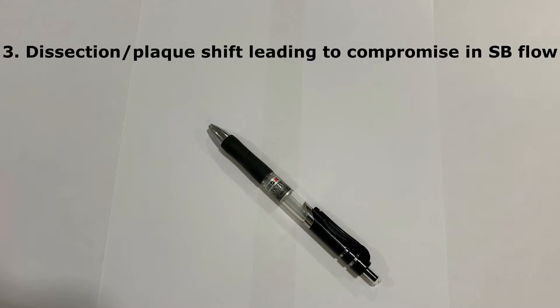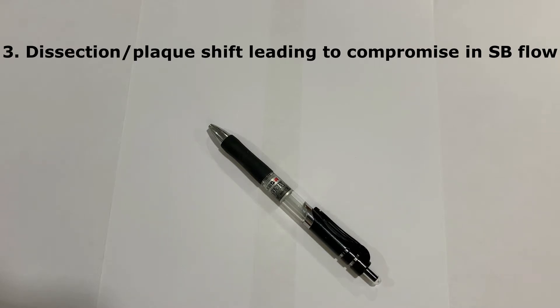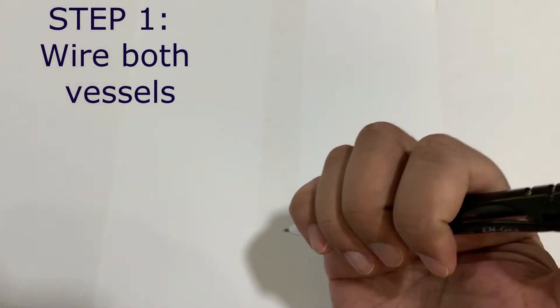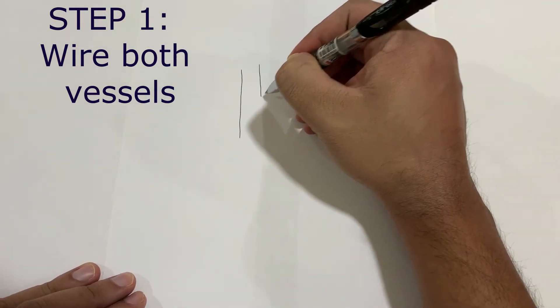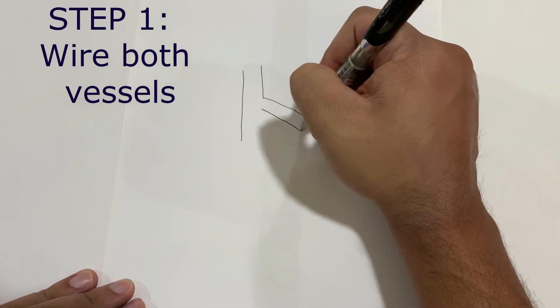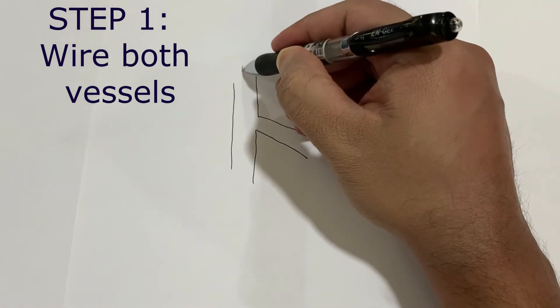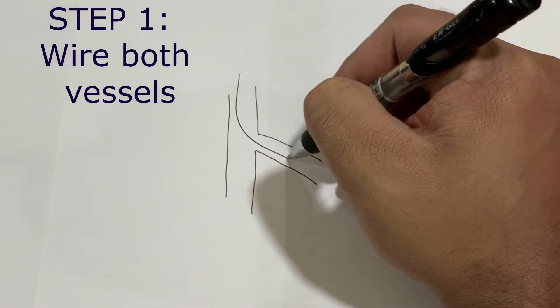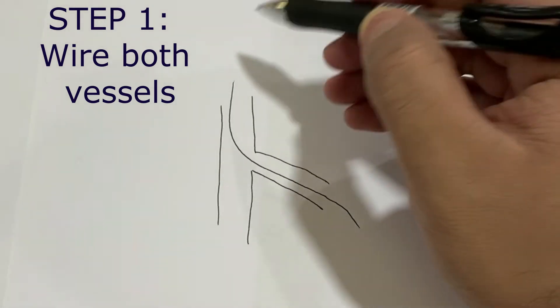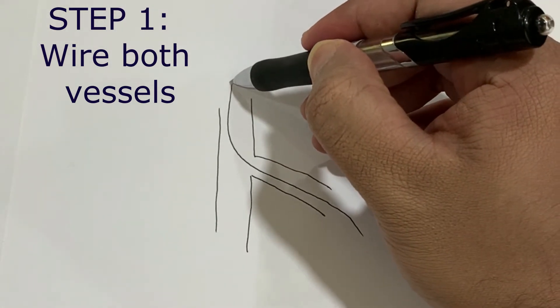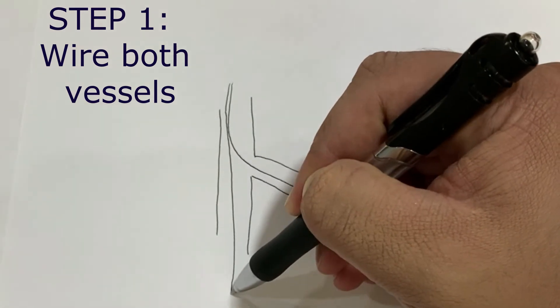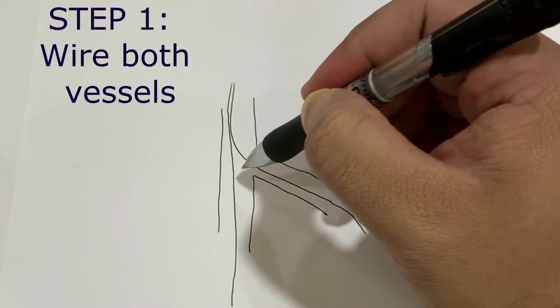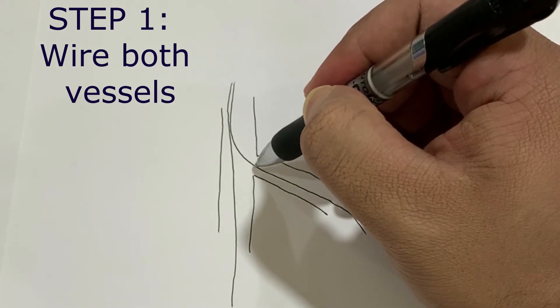Here are the few steps. First, wire the lesion which is more difficult to wire, so usually a side branch lesion is more difficult to wire. Once you wire this, put another wire in the main branch. Once you have wired these, try to use this wire as the more supportive wire.